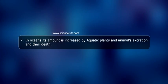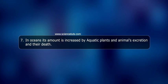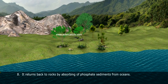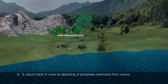Step 7: in oceans, the amount of phosphate is increased by aquatic plants and animals' excretion and their death. It then returns back to rocks by absorbing phosphate sediments from oceans.